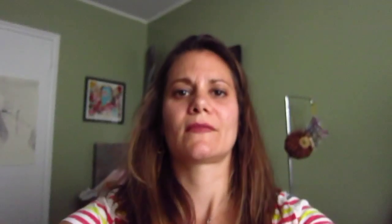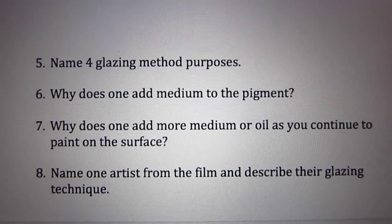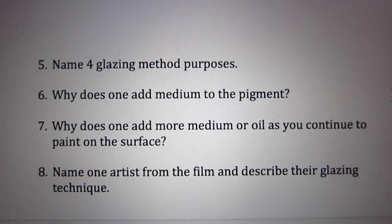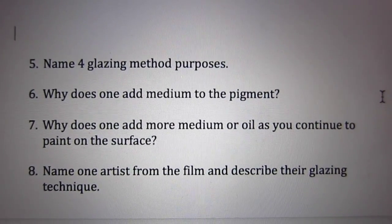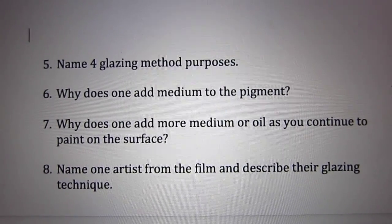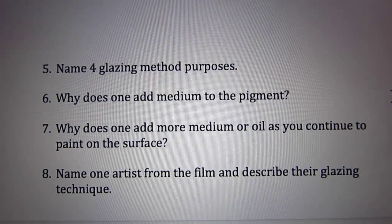Here is part two of the video. I want you to answer the next four questions. In this next section, we're going to hear about artists and how they particularly use the glazing methods. Question five: name four glazing method purposes and why does one add medium to the pigment? Question six — number seven: why does one add more medium or oil as you continue to paint on the surface? And lastly: name one artist from the film and describe their glazing technique.